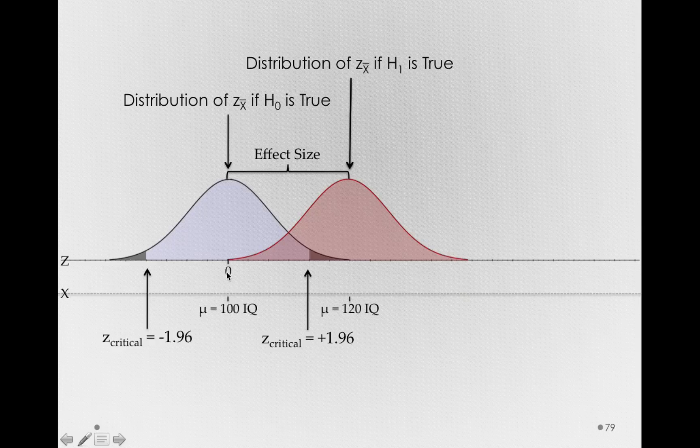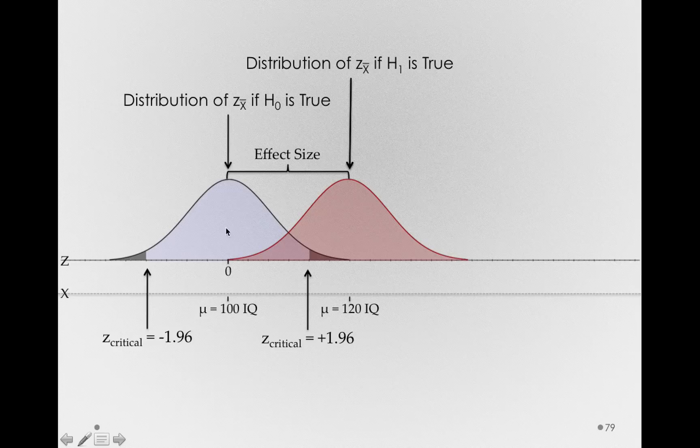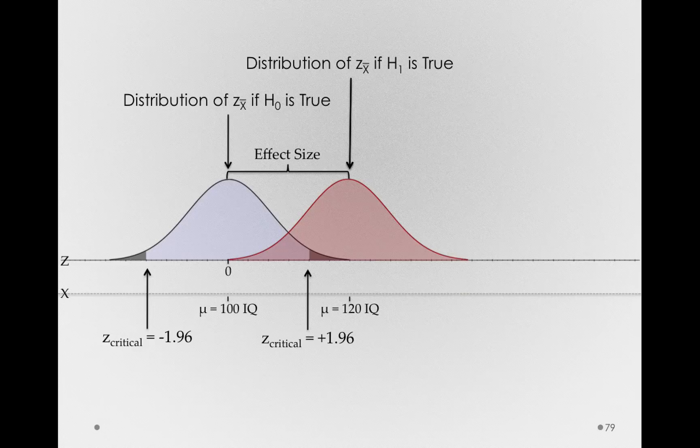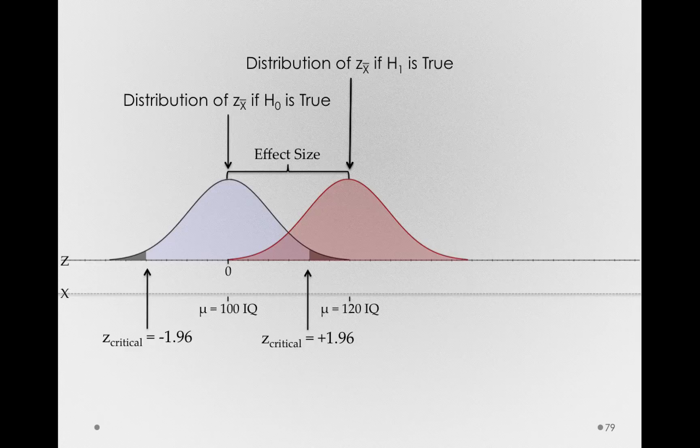Let me say it again. If we get a sample that's more extreme than positive 1.96 in the positive direction, or less than negative 1.96 in the negative direction, those are samples that we agreed before we did the study that would lead us to reject the null hypothesis. So if those are the regions, if those are the cut points where we need to exceed in order to reject the null,